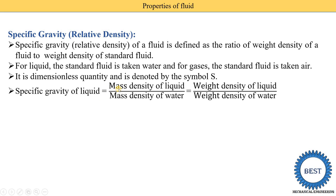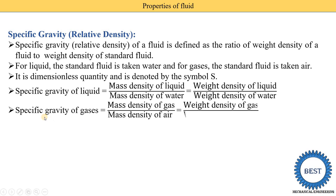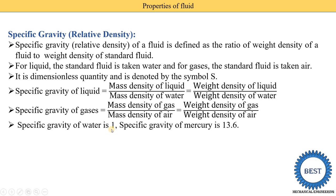The equation for specific gravity of a liquid is mass density of liquid divided by mass density of water, or equivalently weight density of liquid divided by weight density of water. For gases, specific gravity equals mass density of gas divided by mass density of air. The specific gravity of water is one, because mass density of water (1000) divided by the standard density (1000) equals one.